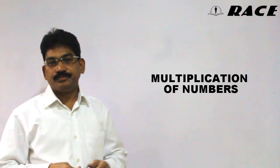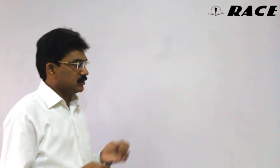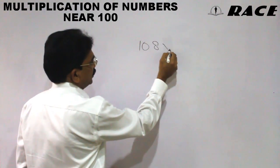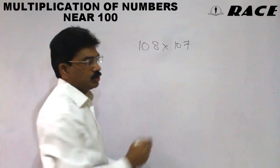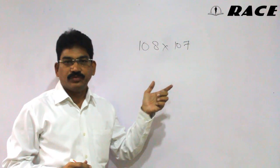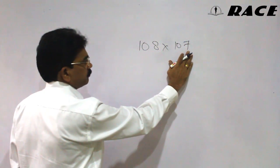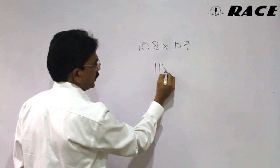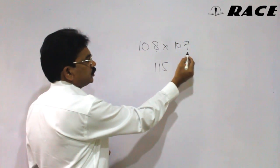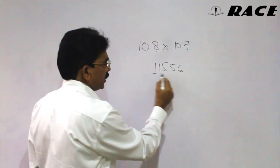Let us see some mind math techniques, especially in multiplications. For example, take 107 into 108. Usually it takes more time, but with a simple mind math technique, the first part of the answer is 108 plus 7, which is 115.